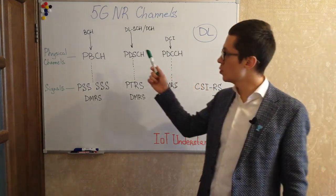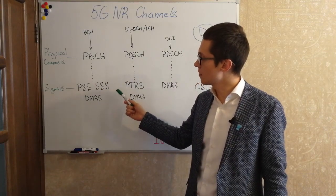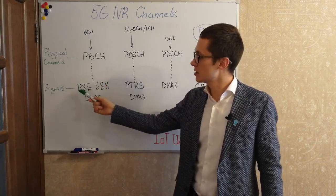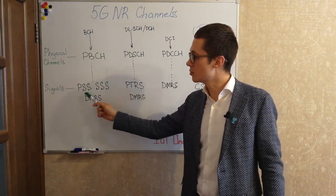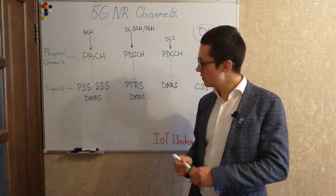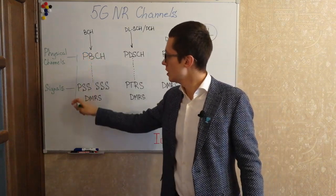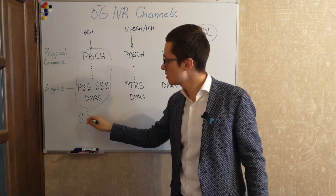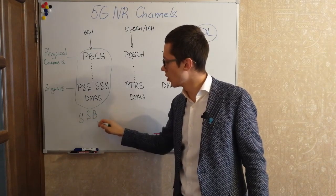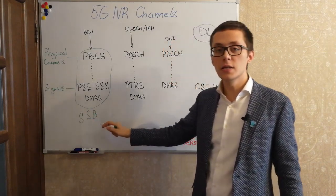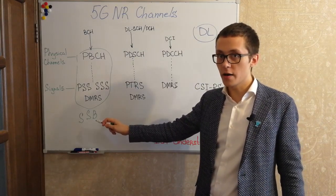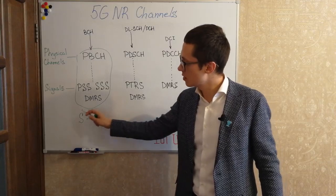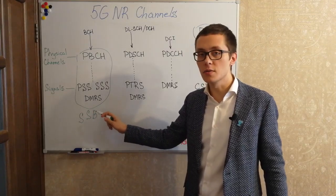First of all, the combination of the physical broadcast channel, synchronization signals, and the demodulation reference signal — this combination in 5G NR we call the synchronization signal block (SS block), and in 5G NR each cell is defined by this synchronization signal block.